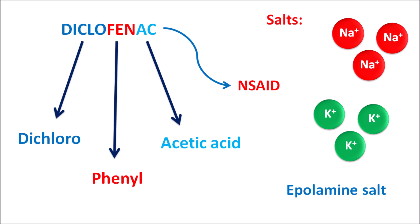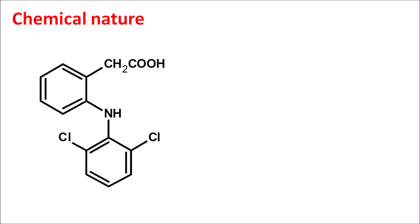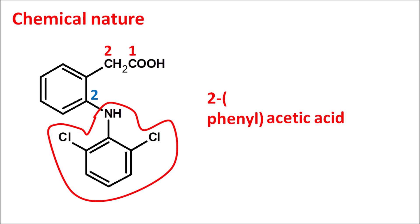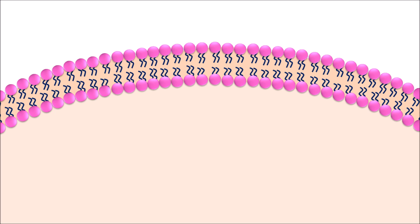Today we will see how diclofenac acts, its important precautions, side effects, and chemical nature. Looking at the structure of diclofenac, the carboxylic acid group is present. Numbering the carbons, it is a two-carbon acid derivative — a 2-phenyl acetic acid. To this phenyl ring at the second position, a group with two chlorines at the ortho positions is attached, making it dichloro, attached to an aniline ring. So the name is 2-(2,6-dichloroaniline) acetic acid.